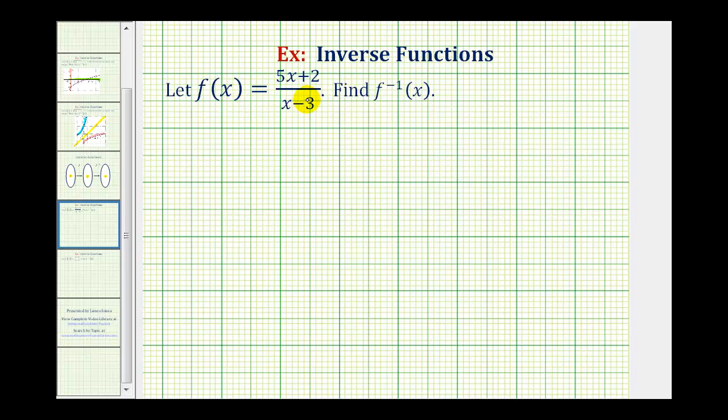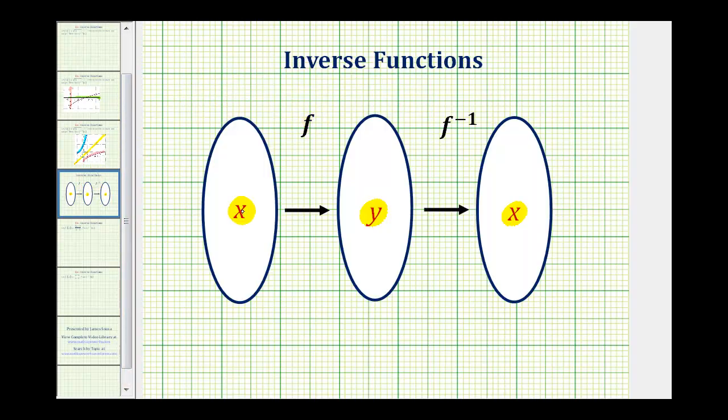To remember how to do this, I think it's important to recognize that the inverse function is going to undo the operation of the original function. For example, if x is the input into the function f and y is the output, this y becomes the input into the inverse function, which returns the original value of x.